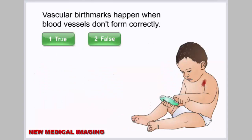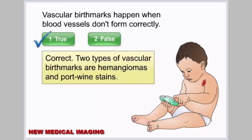Vascular birthmarks happen when blood vessels don't form correctly — select true or false. Correct: two types of vascular birthmarks are hemangiomas and port wine stains.